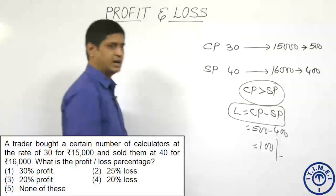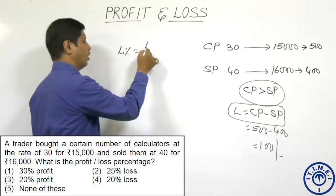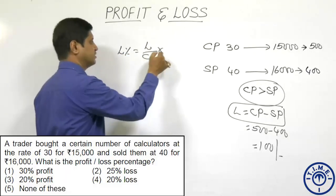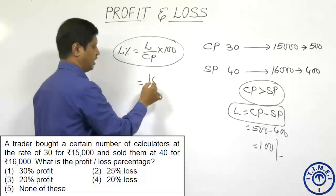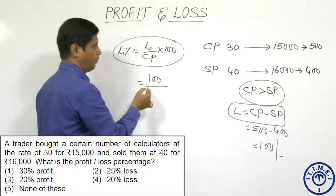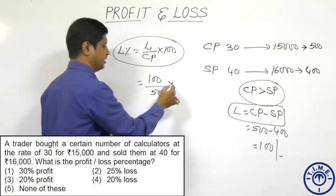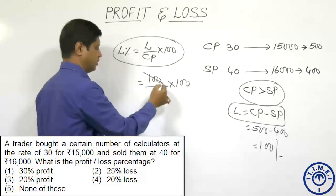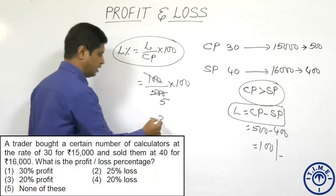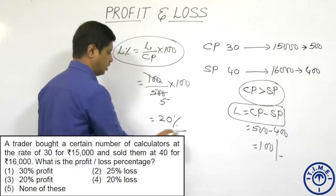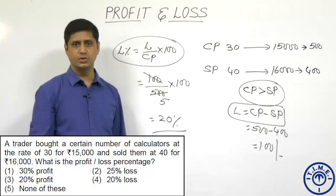The loss is ₹100. Loss percentage = loss/cost price × 100 = 100/500 × 100. Simplifying: 100 goes 5 times into 500, result is 100/5 = 20 percent. The loss percentage is 20 percent, so the right option is 4.